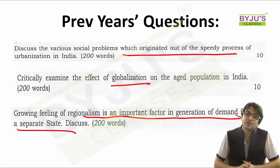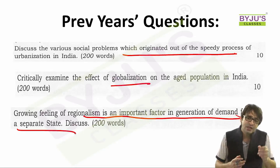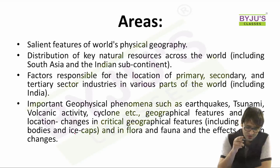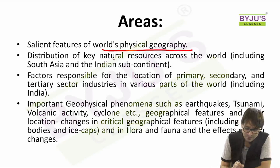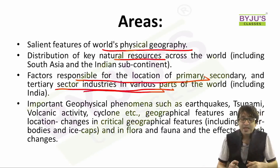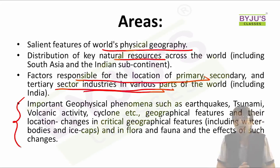So we have discussed history, political philosophies, and society of India. Now let us come to the fourth important area, which is geography. The syllabus talks about salient features of world's physical geography, distribution of key natural resources across the world, factors responsible for the location of primary, secondary, and tertiary sector industries in various parts of the world including India, and various important geophysical phenomena such as earthquakes, tsunamis, cyclones, and the effect of climate change on flora and fauna.